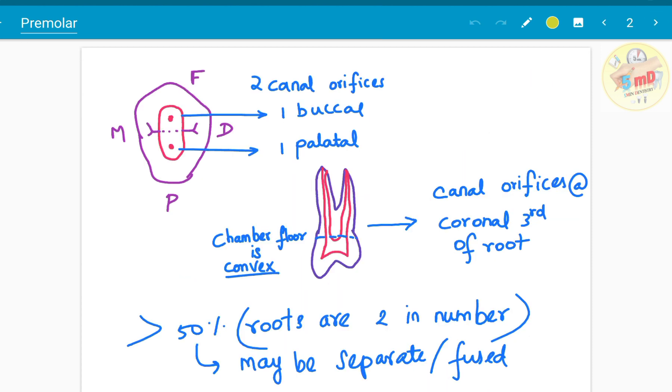The two canal orifices are one located buccally and one in the palatal aspect. The chamber floor is convex as you could make out from this diagram here. The canal orifices are located at the coronal third of the root, which you should also remember. That is the depth which you should locate the canal orifice.